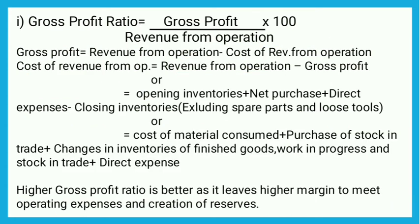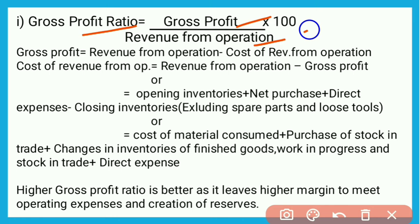To calculate gross profit ratio, the formula is: Gross Profit Ratio = Gross Profit ÷ Revenue from Operations × 100.